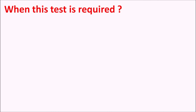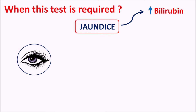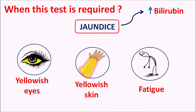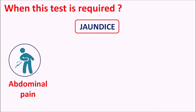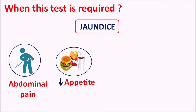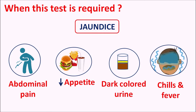One important clinical condition is jaundice, where elevated levels of bilirubin produce various symptoms — particularly yellowish discoloration of the eye and skin. Some unexpected weakness and fatigue can also be observed. Other symptoms include abdominal pain, nausea, decreased appetite leading to weight loss, dark colored urine due to excretion of bilirubin in urine, and chills and fever — all of which are associated with increased bilirubin levels categorized as jaundice.